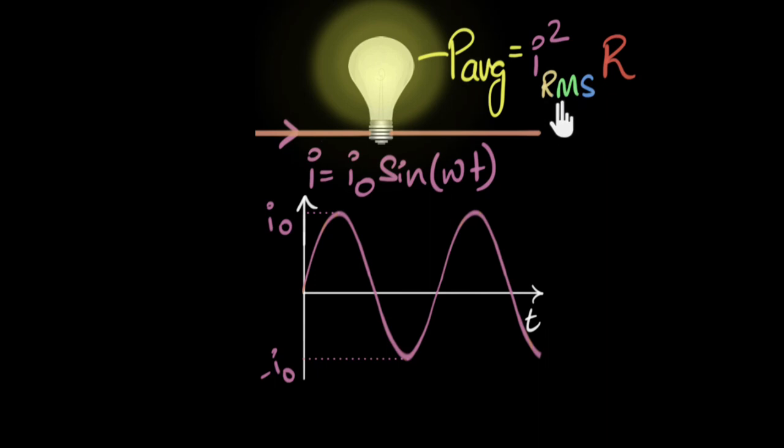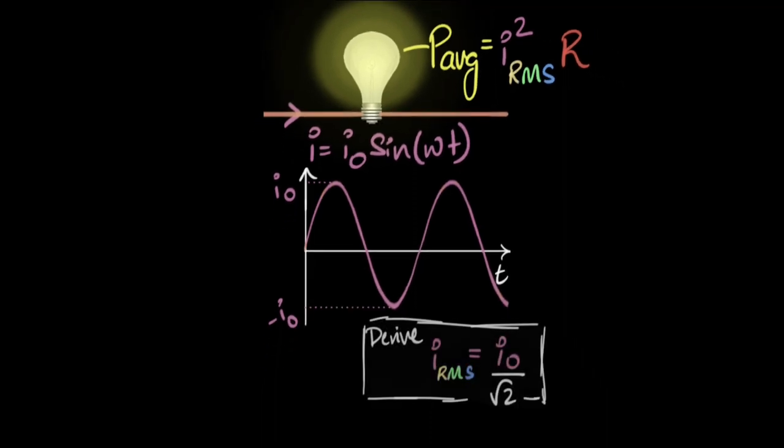If you know what the RMS value of the current is, we can just say average power equals I² times R. Or if you know the RMS voltage, we can say it's V² over R. Now the goal of this video is to figure out the RMS values for sinusoidal currents or voltages.